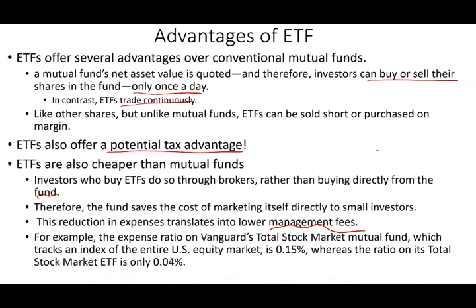Also, because you don't have someone actively managing your ETF, it's cheaper. Investors who buy ETFs do so through a broker rather than through a fund, so the service cost of marketing is smaller and the management fee is smaller. For example, the expense ratio on the Vanguard Total Stock Market mutual fund tracking the S&P 500 is 0.15%, while the total stock market ETF is only 0.04%. If you have millions or billions invested, this translates into huge dollar differences.